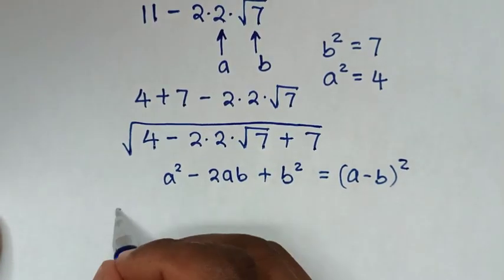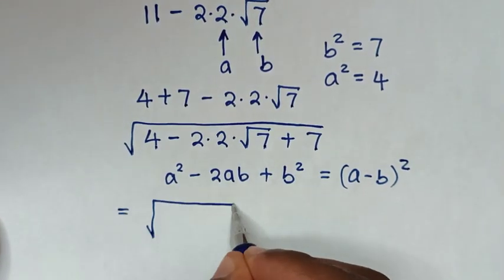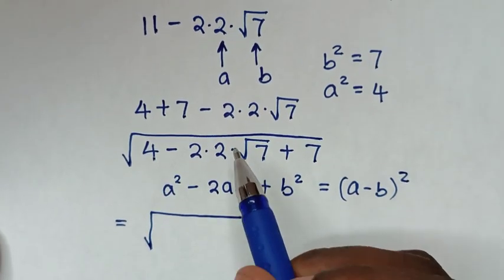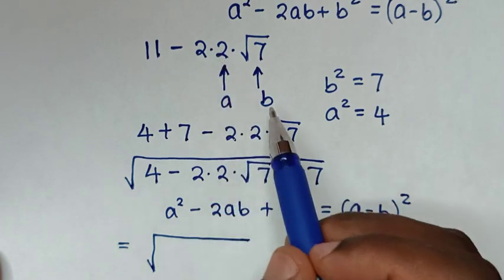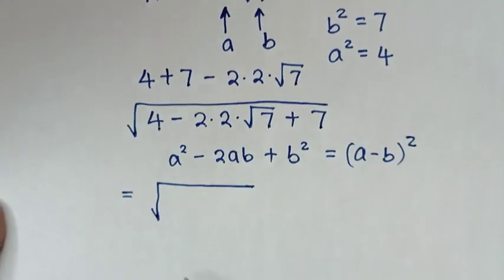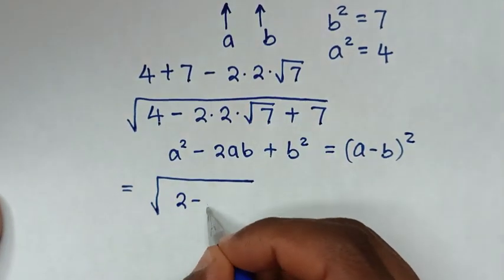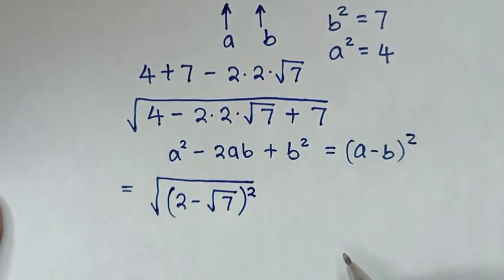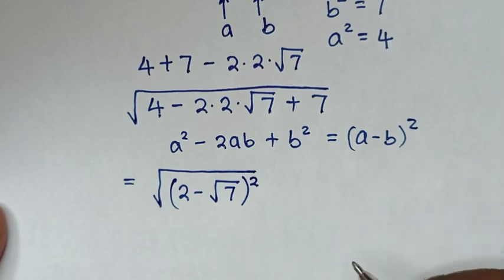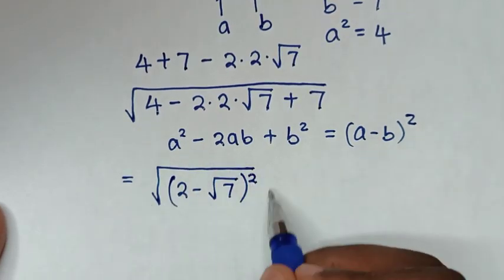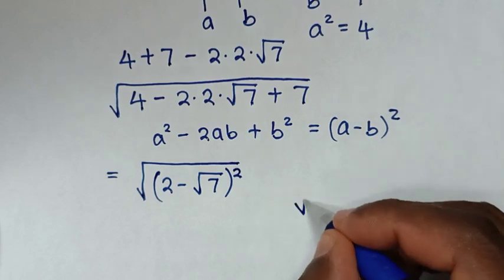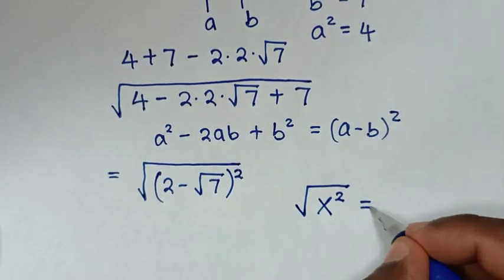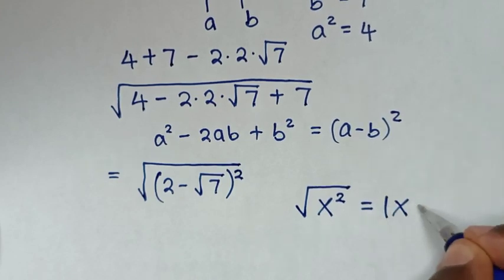It will be equal to the square root of this form, which is a minus b. With a equal to 2 and b equal to square root of 7, it will be square root of 2 minus square root of 7, bracket squared. This expression is in the form of square root of x squared, which equals the absolute value of x.